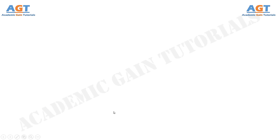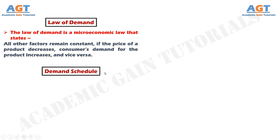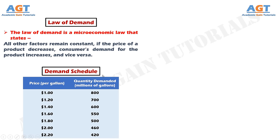The law of demand is a microeconomic law that states: all other factors remaining constant, if the price of a product decreases, consumers' demand for the product increases, and vice versa. A demand schedule is a table that shows a range of prices for a certain good or service and the quantity demanded at each price.